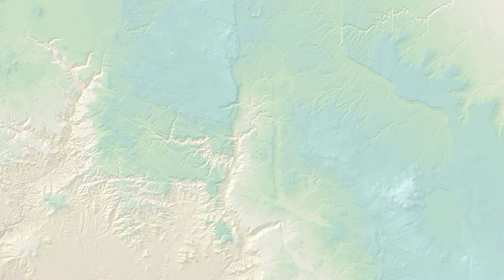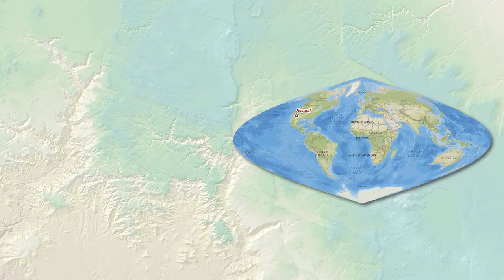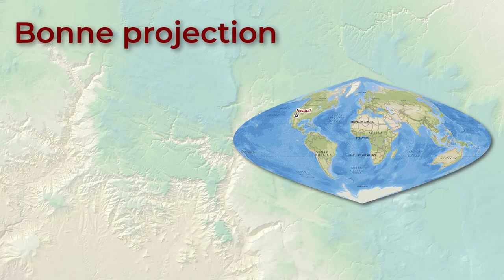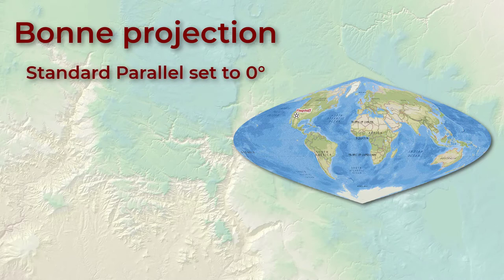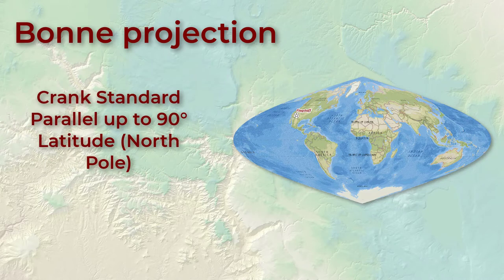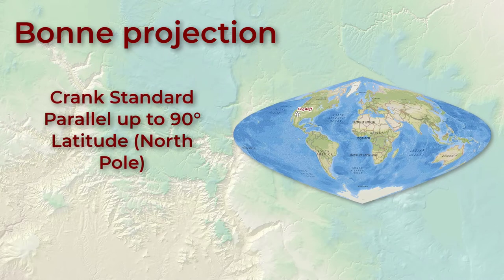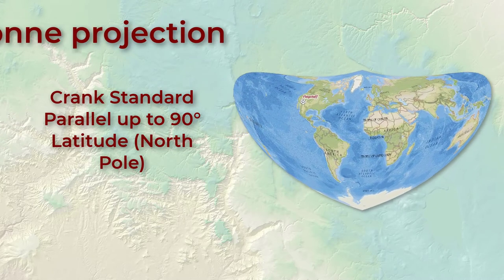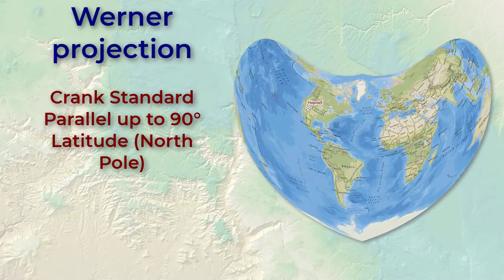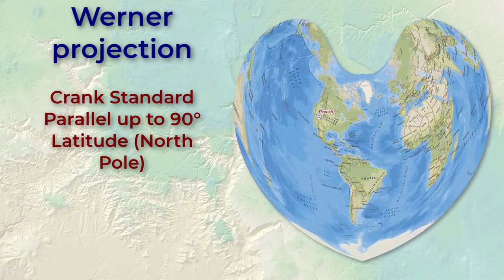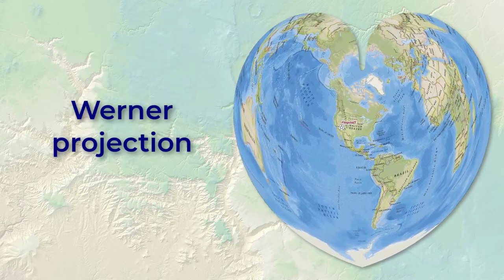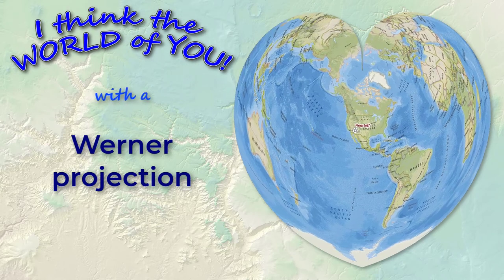Shortly we're going to discuss why you would choose one projection over another and show a few projections you'll probably use a lot in your career. But first I want to show you a few projections I really like. This one is called the Bond projection — there's nothing particularly special about it by itself. But if we adjust one parameter, specifically setting the standard parallel to be at the north pole, it becomes a special case called the Werner projection. This one is just graphically fun.